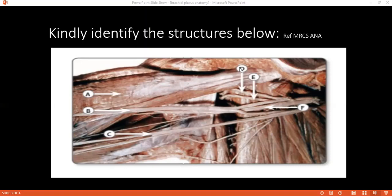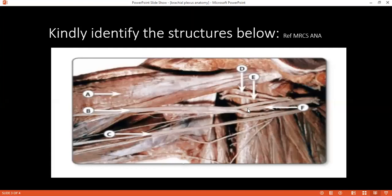Is it the lateral pectoral nerve? No — it's musculocutaneous. That's the musculocutaneous nerve. E — would you like to guess? It's the posterior cord dividing and going posteriorly, so the auxiliary nerve. E is the axillary nerve. And F is the radial nerve. Very good, excellent!